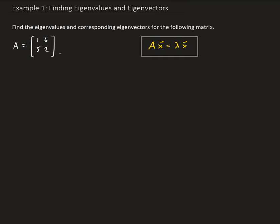In this example, we are interested in finding the eigenvalues and corresponding eigenvectors for the following matrix. To find these eigenvalues and eigenvectors, we start with the equation shown in the box: AX equals lambda X. Here, A is the matrix, X is the vector, and lambda is the eigenvalue.